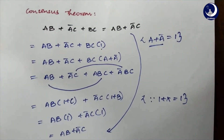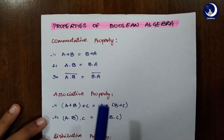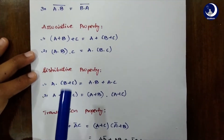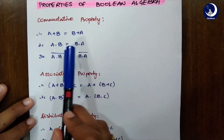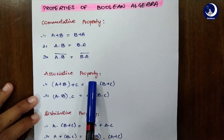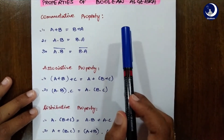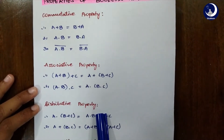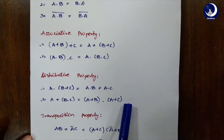Now let's look into a few properties of Boolean algebra. We have commutative property: A+B=B+A, A·B=B·A. Associative property: A+(B+C)=(A+B)+C. You have already studied commutative, associative, and distributive properties in your earlier classes — there is nothing new in these concepts. Just go through these formulas.